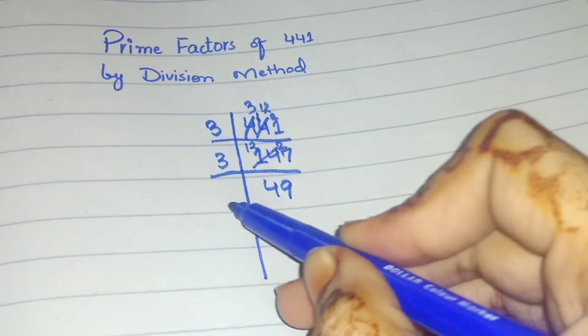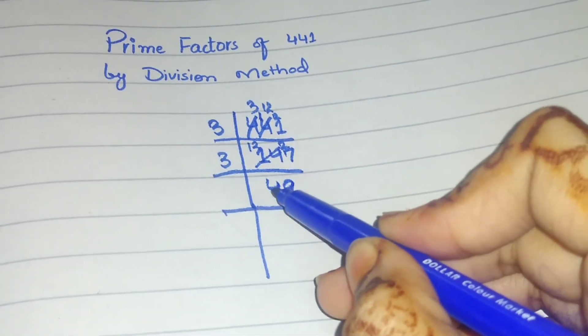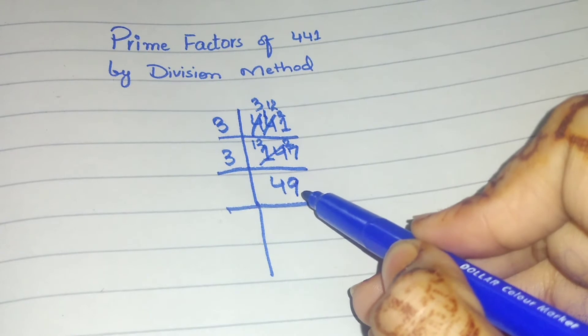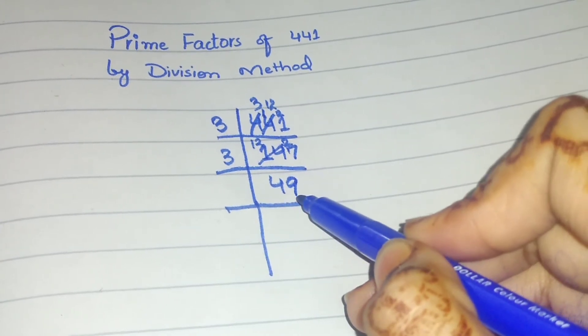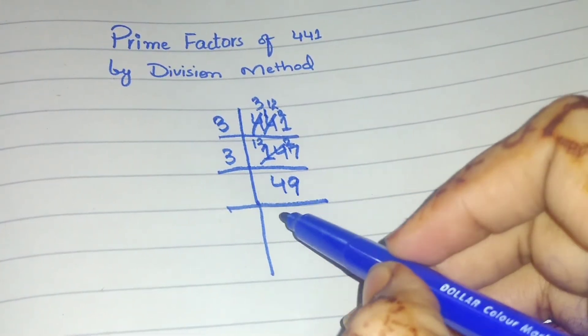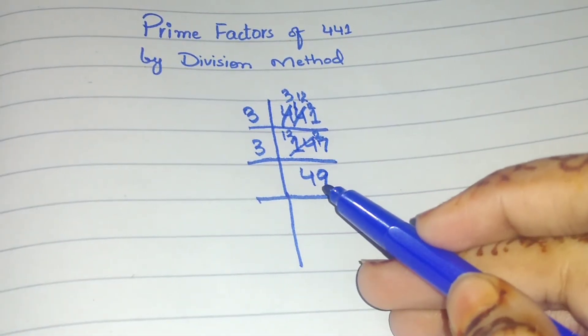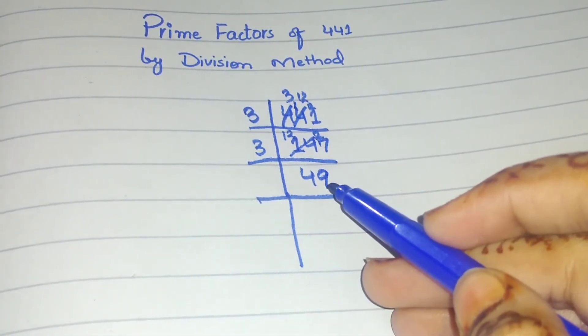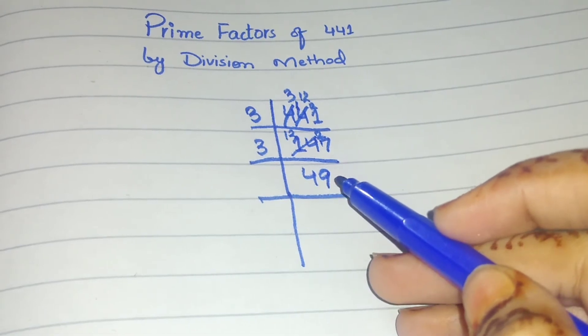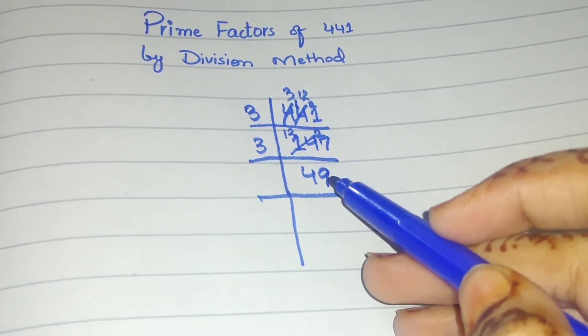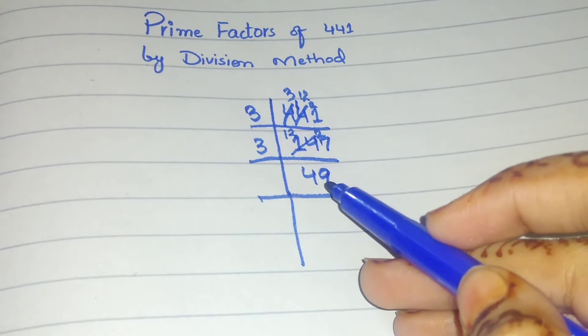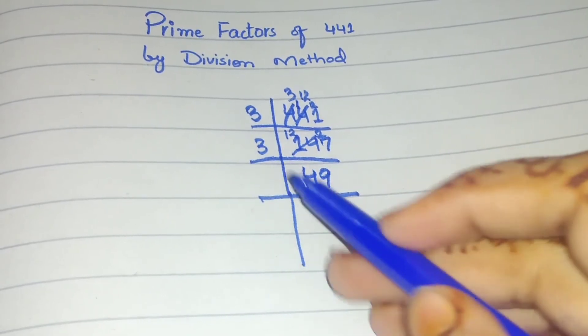If we add 4 plus 9, it becomes 13. 13 is not a multiple of 3, so it's not divisible by 3. The next prime number is 5. Numbers ending in 0 or 5 can be divided by 5. We have 9, so 49 is not divisible by 5 either.